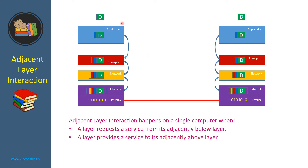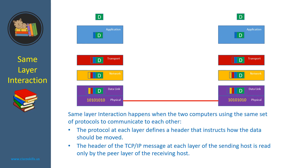For example, at the sending host, the Telnet protocol requests a service from the TCP protocol at the transport layer. This is called adjacent layer interaction. The second type of layer interaction is same layer interaction. Same layer interaction happens when two computers use the same set of protocols to communicate with each other.